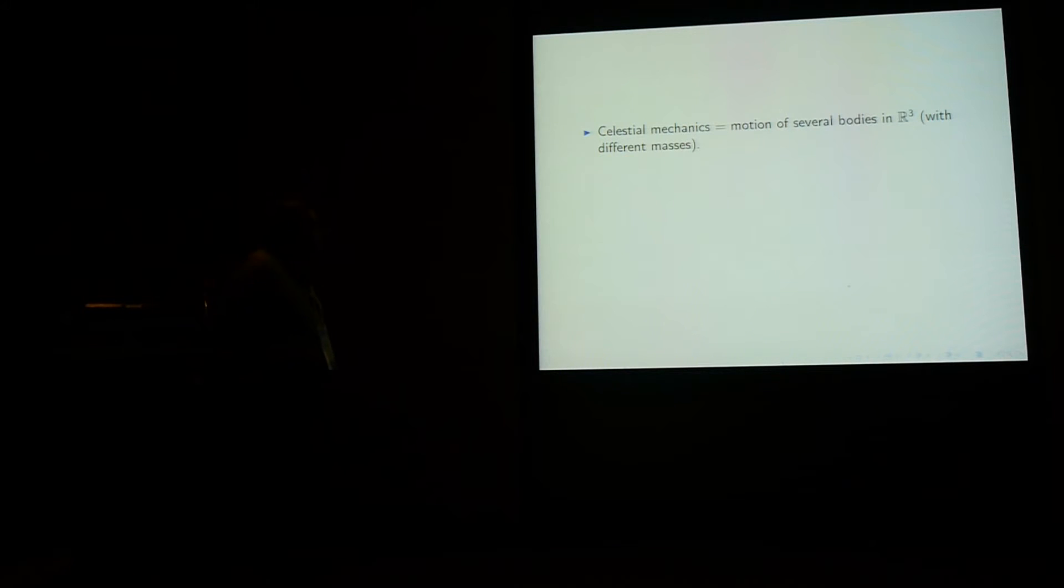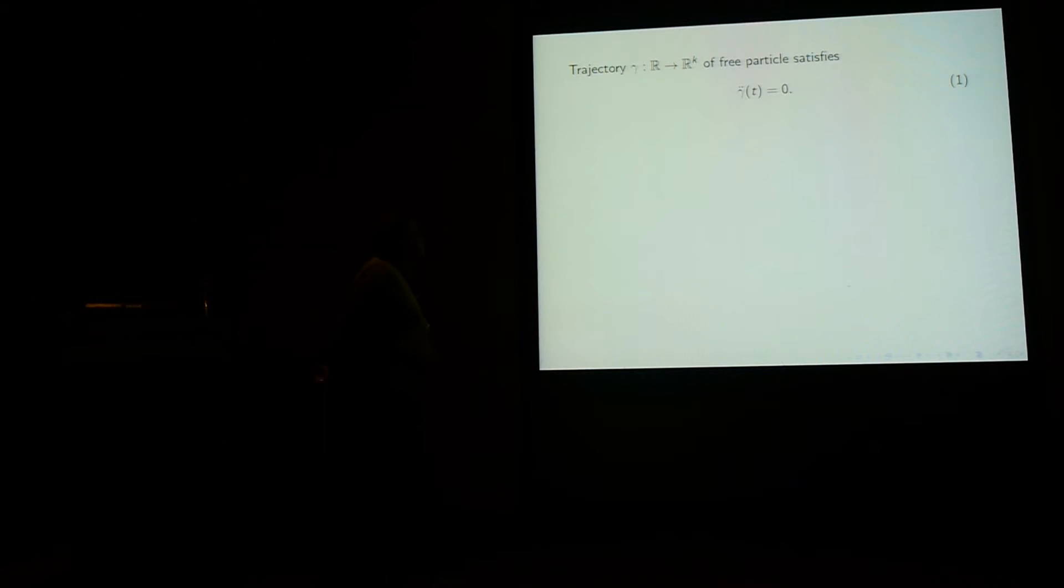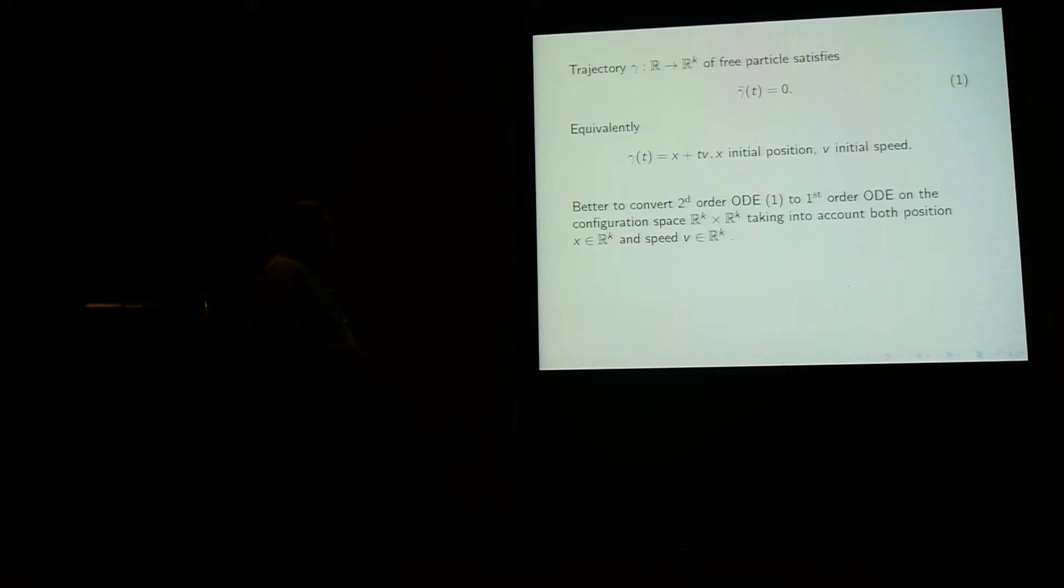So Celestial Mechanics is motion of several bodies in R³ with different masses. We'll take a simplified model, motion of a free particle of mass M in a higher-dimensional Euclidean space, of course. If K is a multiple of M, then you can think of this also as a motion of M particles in R³, all with the same mass. So we start with the trajectory of a free particle, no force. And it satisfies, of course, gamma double dot equals zero, or if gamma t is equal to x plus t v, where x is the initial position and v is the initial speed.